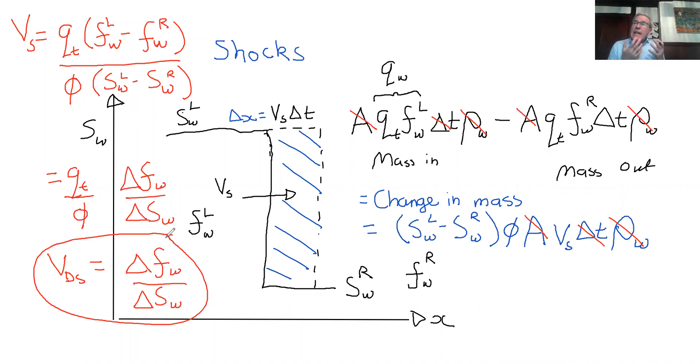So if there's a discontinuity in saturation, if there's a discontinuity, then the speed with which this discontinuity travels is the change in fractional flow divided by the change in saturation.